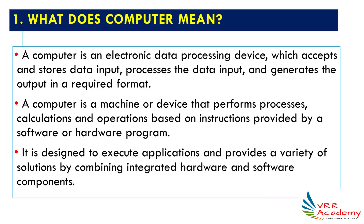What does computer mean? A computer is an electronic device, or in simple terms, an electronic data processing device. This device is going to process the data — it accepts data from the user, stores the data inside the computer, and then processes it. Processing can include operations like addition, subtraction, multiplication, or division, and finally the computer generates the output.